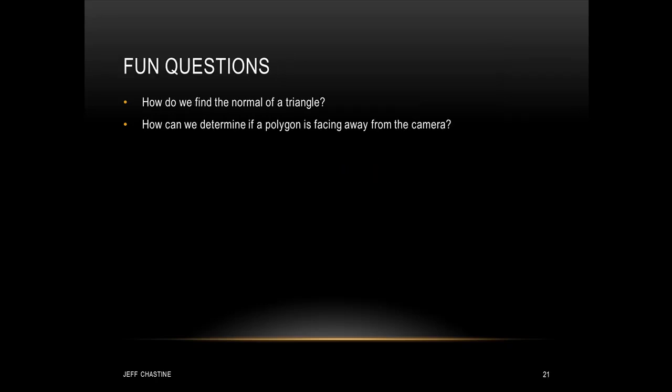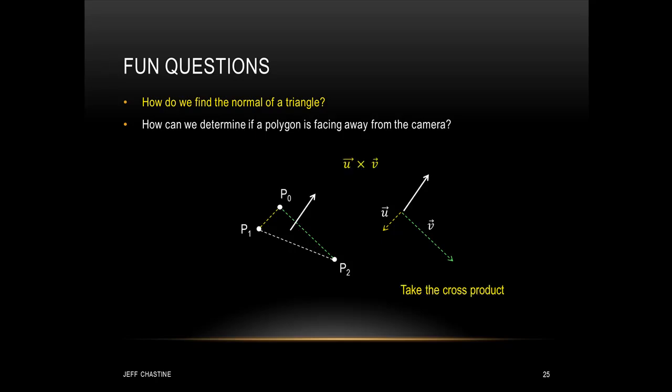Here are some questions to test your understanding. First: how would we find the normal of a triangle — the direction perpendicular to the plane? A triangle has three vertices: point 0, point 1, and point 2. We create two vectors between points: vector u between point 0 and point 1, and vector v between point 0 and point 2. Then we take the cross product of those two vectors, and that gives us the normal of the triangle. In computer graphics, this normal is commonly referred to as vector n.